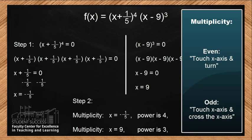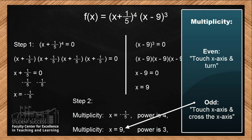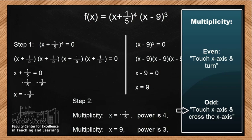This function has a multiplicity of 4 for x equals negative one-fifth, so at x equals negative one-fifth, the function will touch and turn at that zero. At x equals 9, the power is 3, multiplicity is 3 — which is odd — so the function will cross the x-axis at that root. To summarize: even multiplicity means touch and turn; odd multiplicity means cross the x-axis at that root.